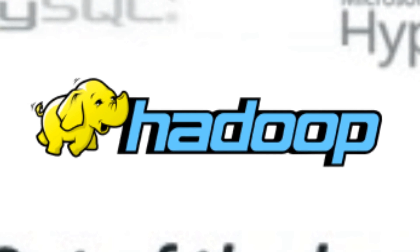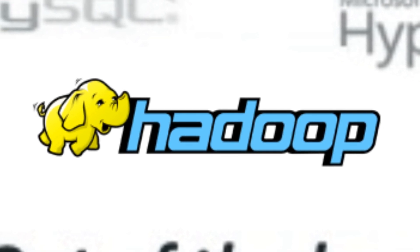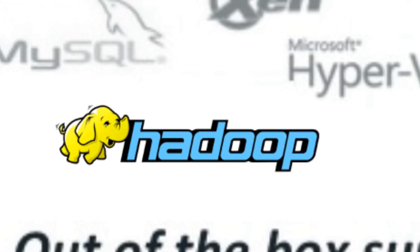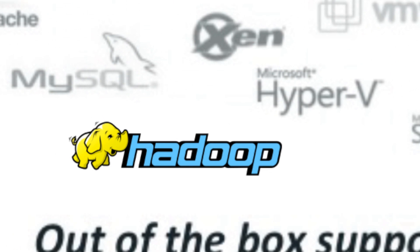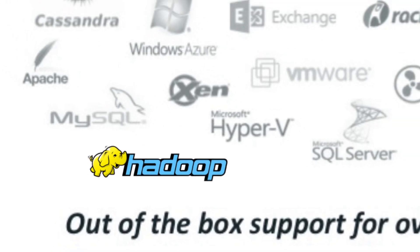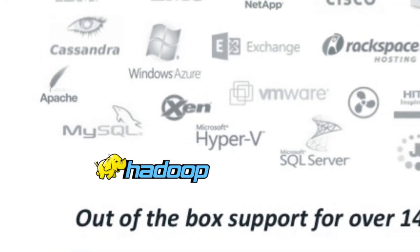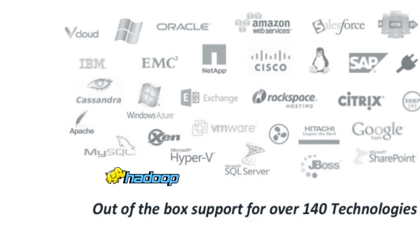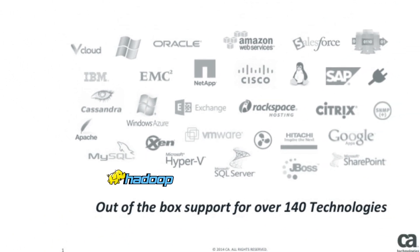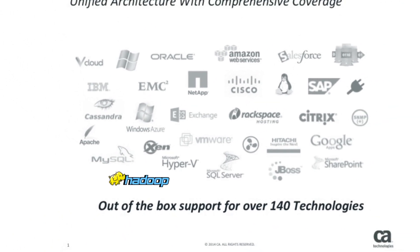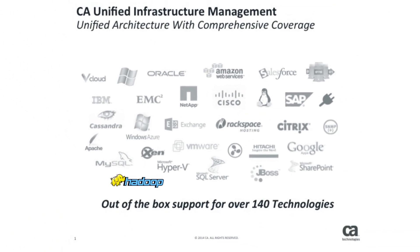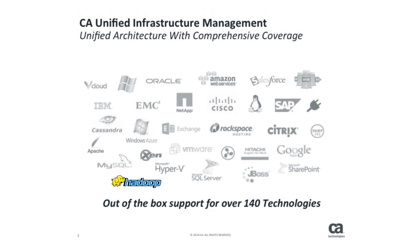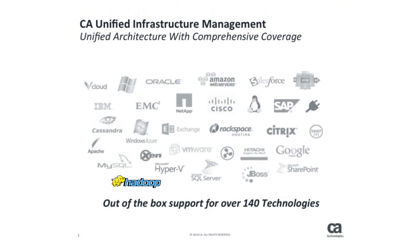CA Unified Infrastructure Management is not just a standalone Hadoop monitoring software. It helps your team ensure that you are delivering an optimal customer experience by monitoring the availability and performance of all your services, applications, and technologies both inside and outside the data center through a single, unified, comprehensive solution.